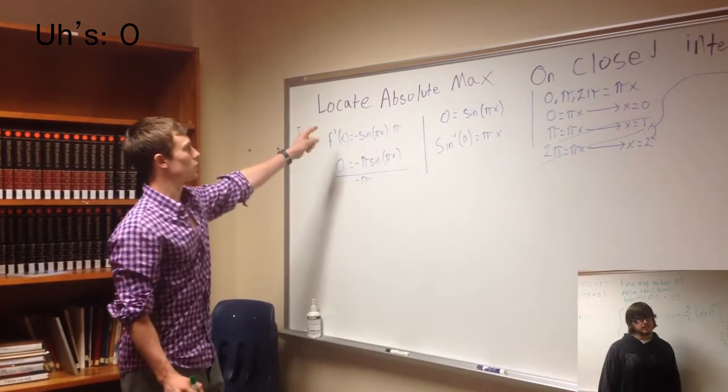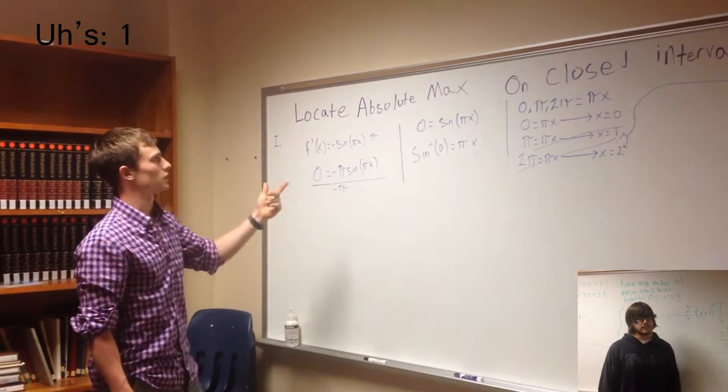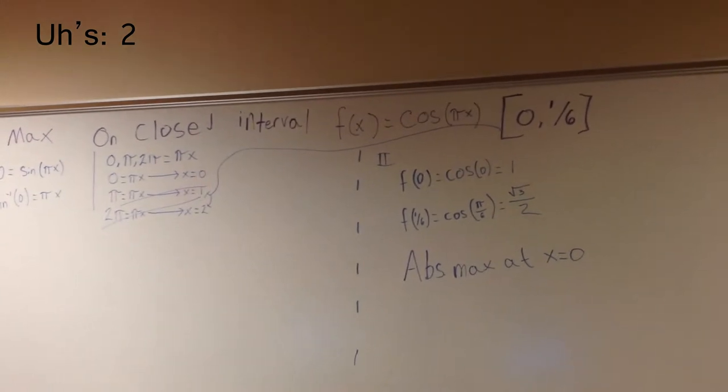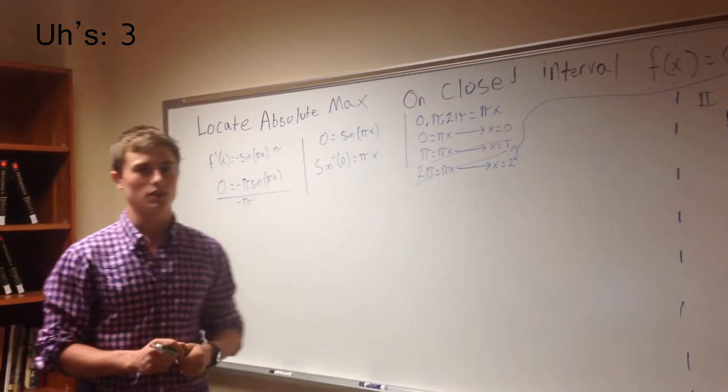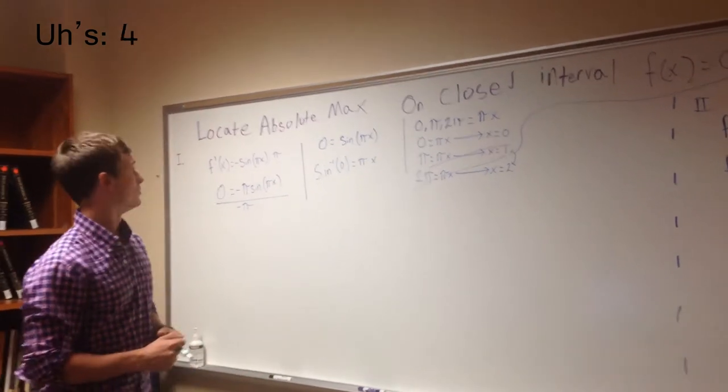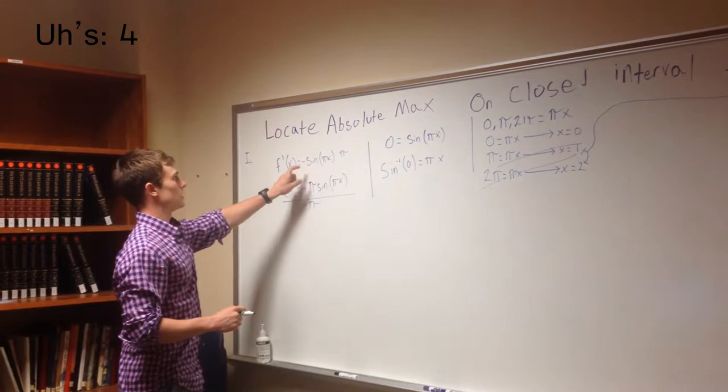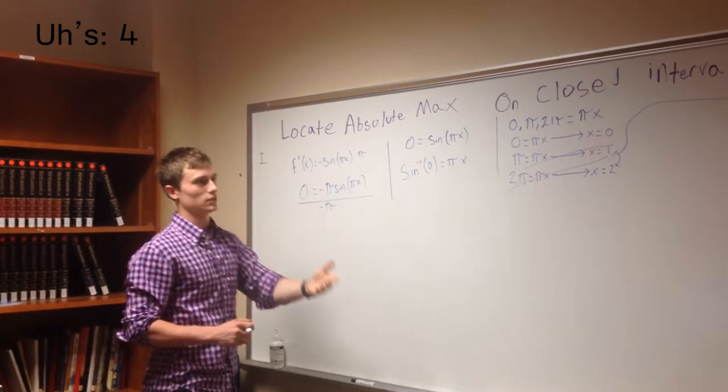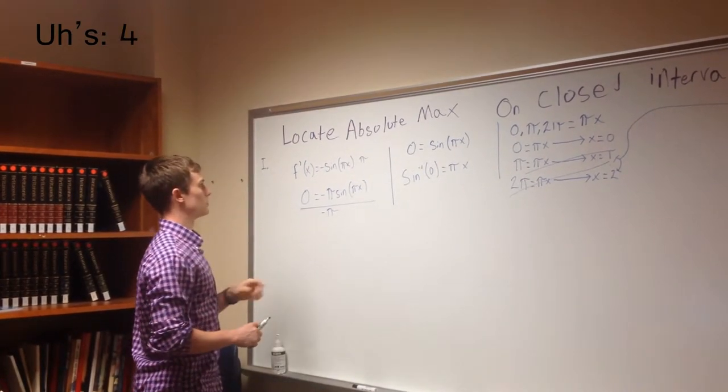So, we're going to talk about EVT. The problem says locate absolute max on the closed interval zero to one-sixth of f of x equals cosine of pi x. So, we're going to start off by finding the derivative, which is going to be negative sine pi x times pi, because, as you know, the derivative of a cosine function is negative sine u times u prime.